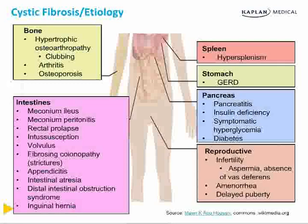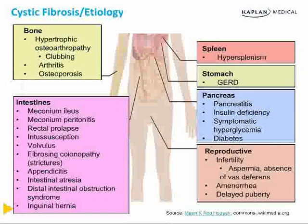Reproductive abnormalities are also common. Infertility — usually because of aspermia or absence of the vas deferens — is common in men. From a female perspective, amenorrhea and/or delayed puberty is sometimes seen as well.